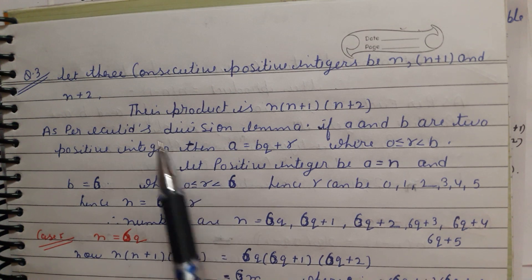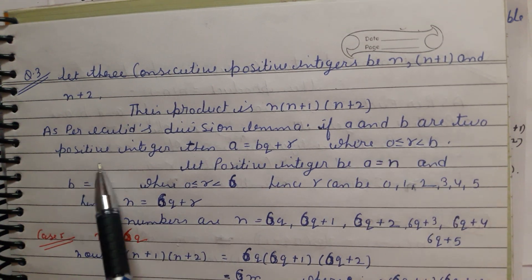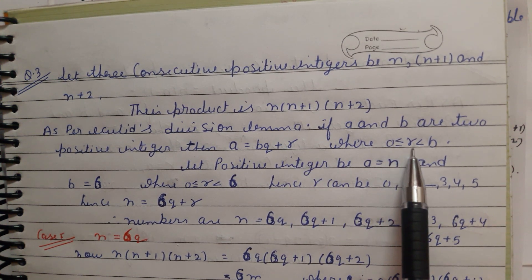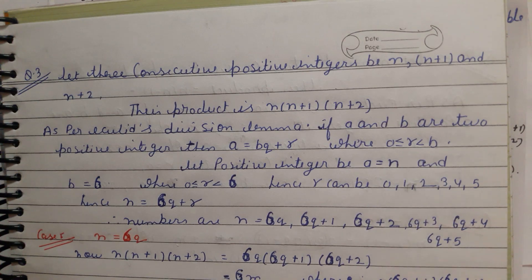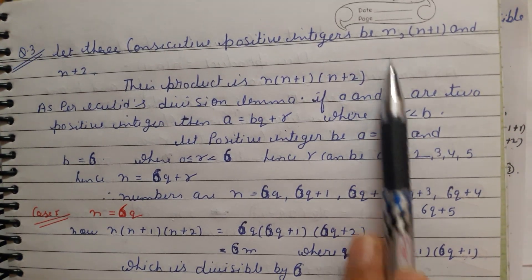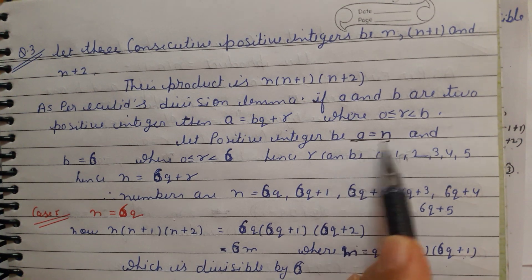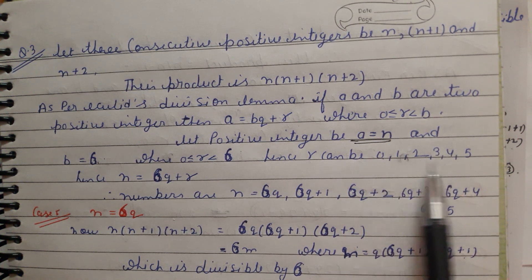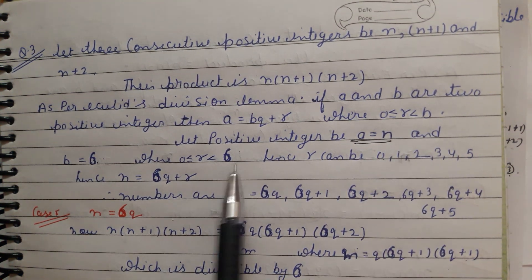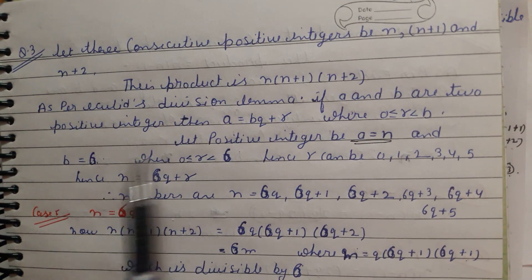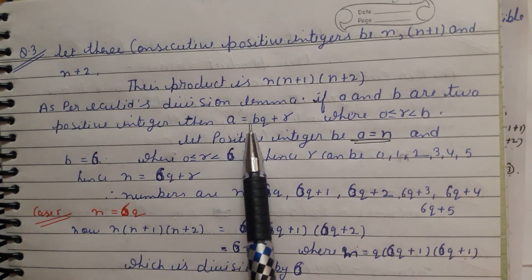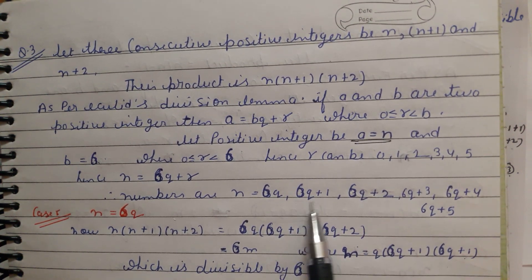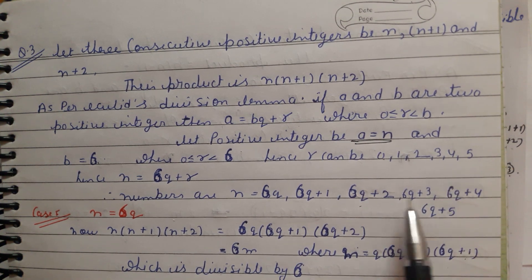The divisor will be 6. In Euclid's Division Lemma, if a and b are two positive integers, then a = bq + r, where 0 ≤ r < b. Since we have to put a value for n and b is 6, r can take values 0, 1, 2, 3, 4, or 5, giving us 6 cases. So n = 6q, or 6q+1, or 6q+2, or 6q+3, and so on.